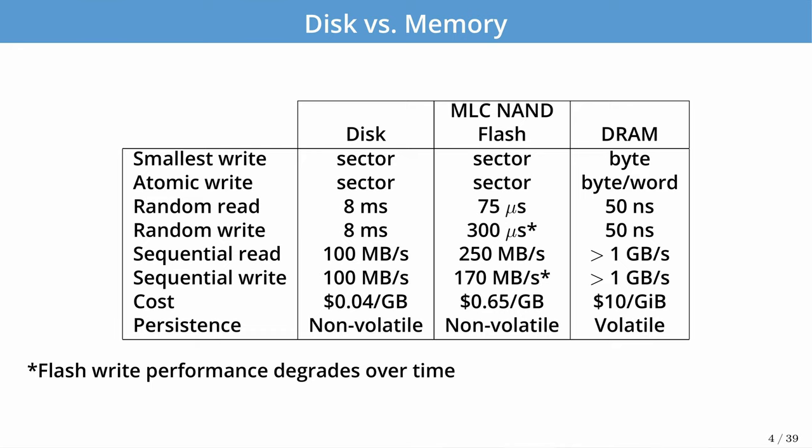Let's put these performance numbers into perspective. On a spinning disk we might see around an 8-millisecond average seek time, so random reads and writes are roughly 8 milliseconds per operation, pretty much regardless of size unless the size is very large. For sequential performance, we should expect somewhere around 100 to maybe 200 megabytes per second per disk. The cost is fairly inexpensive — a few cents per gigabyte.